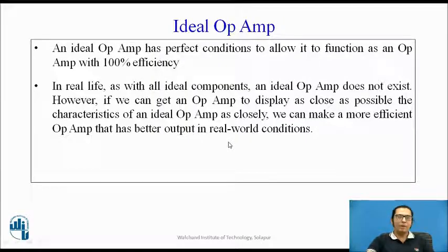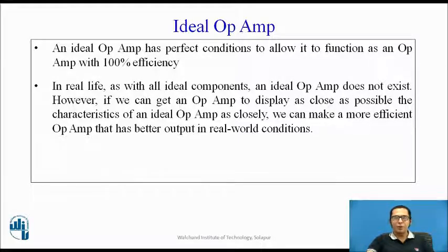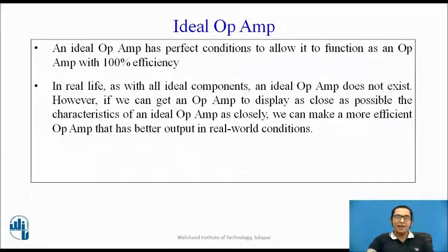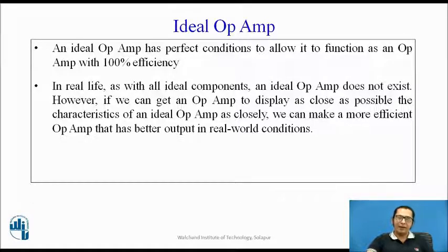So, what is an ideal op-amp? An ideal op-amp has perfect conditions to allow it to function as an op-amp with 100% efficiency. But as we know, in real life no ideal component is available, and similarly no ideal op-amp exists. However, if we can get an op-amp which is performing or showing characteristics as close as possible to that of an ideal op-amp, then we can use it to design more efficient circuits for real-world applications. So, we require a practical op-amp which is as close as an ideal op-amp.